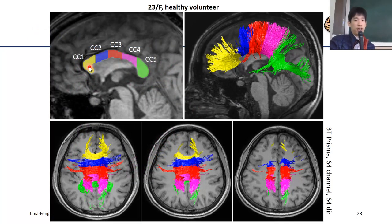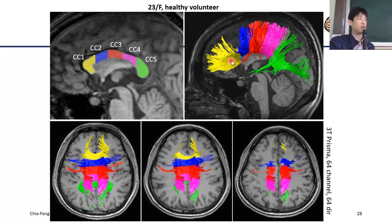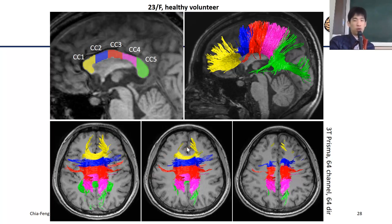Looking at a segmented view, I've combined the genu and rostrum as one segment and separated the body region into two to three parts, with the final segment being the splenium. Labeling fibers related to different portions with different colors, you can see the yellow fibers are highly correlated to the frontal regions, some are correlated to the motor and sensory areas, and others to the visual cortex or occipital lobe.